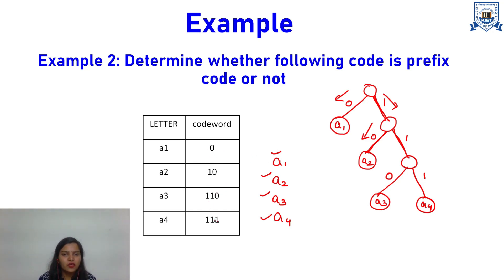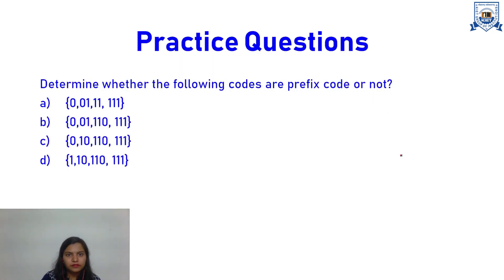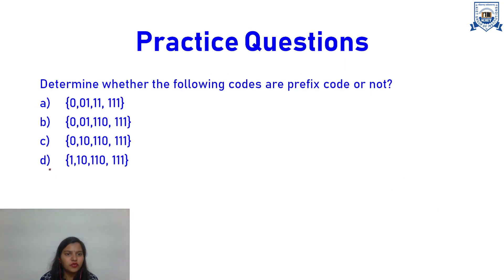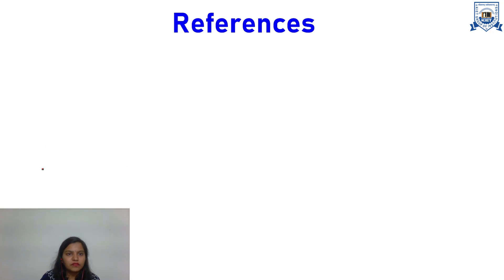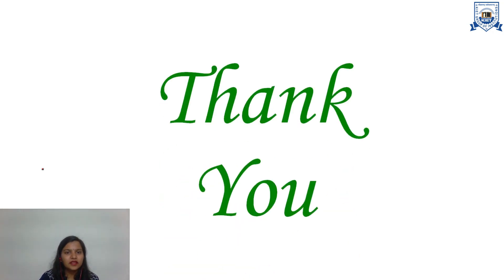No code word is a prefix of any other here. Simply 0 — no other code word starts from 0. Same for 1 0 — no other code word starts from 1 0. For 1 1 0 — no code word starts from 1 1 0. And for 1 1 1 — no code word starts from 1 1 1. So this is the general method; the tree method is the formal method to check whether a code is a prefix code or not. These are some practice questions which you can try using the tree method for all four examples. These are the references for this presentation. Thank you, everyone.